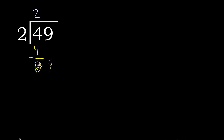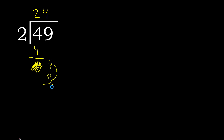2 multiplied by 5 is 10, excessive. 2 multiplied by 4 is 8. Subtract: the remainder is 1. There is no number that goes down.